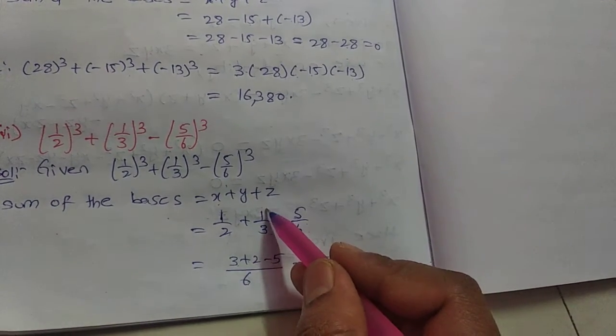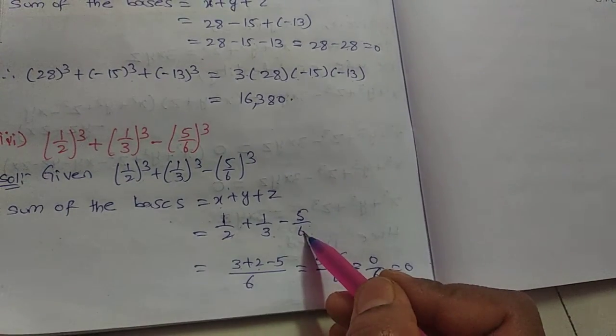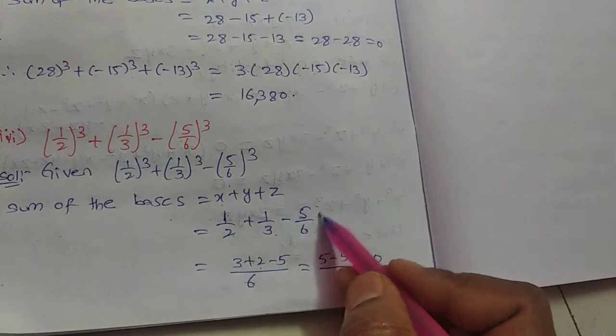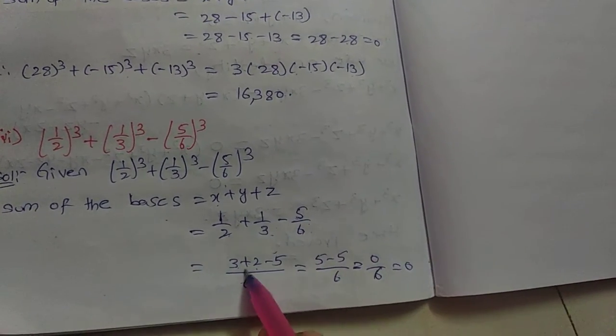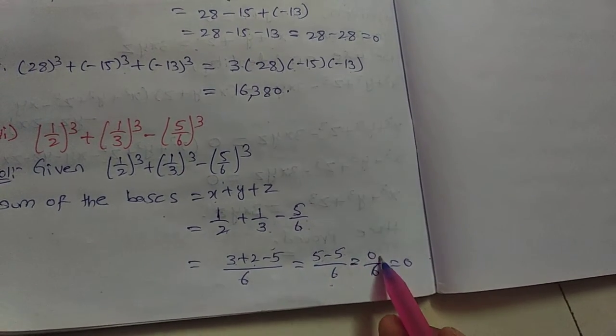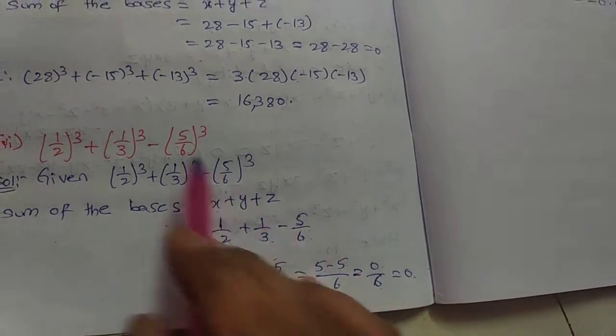3 plus for the second, multiply by 2: 1 × 2 = 2. Minus 5. So (3 + 2 - 5)/6. That's 5 - 5 = 0, so 0/6 = 0. Zero divided by anything is zero.